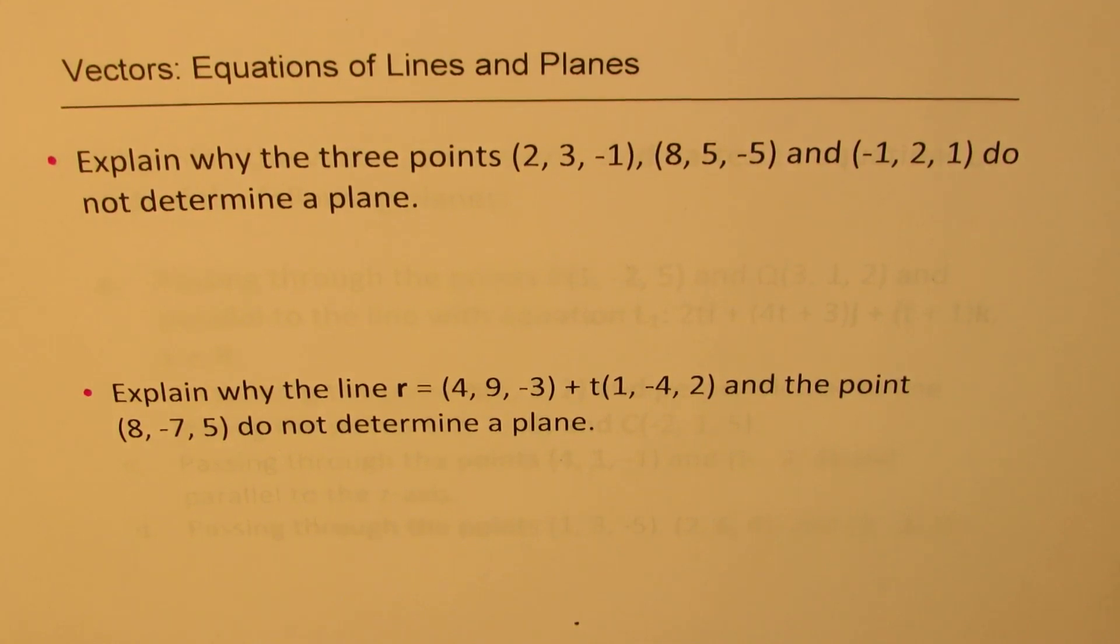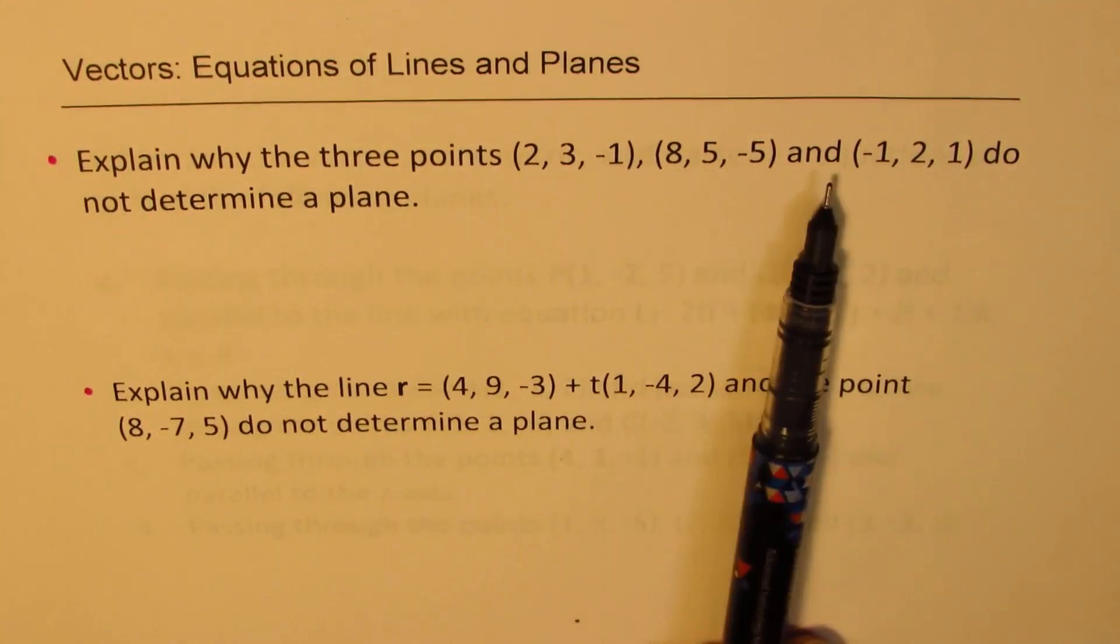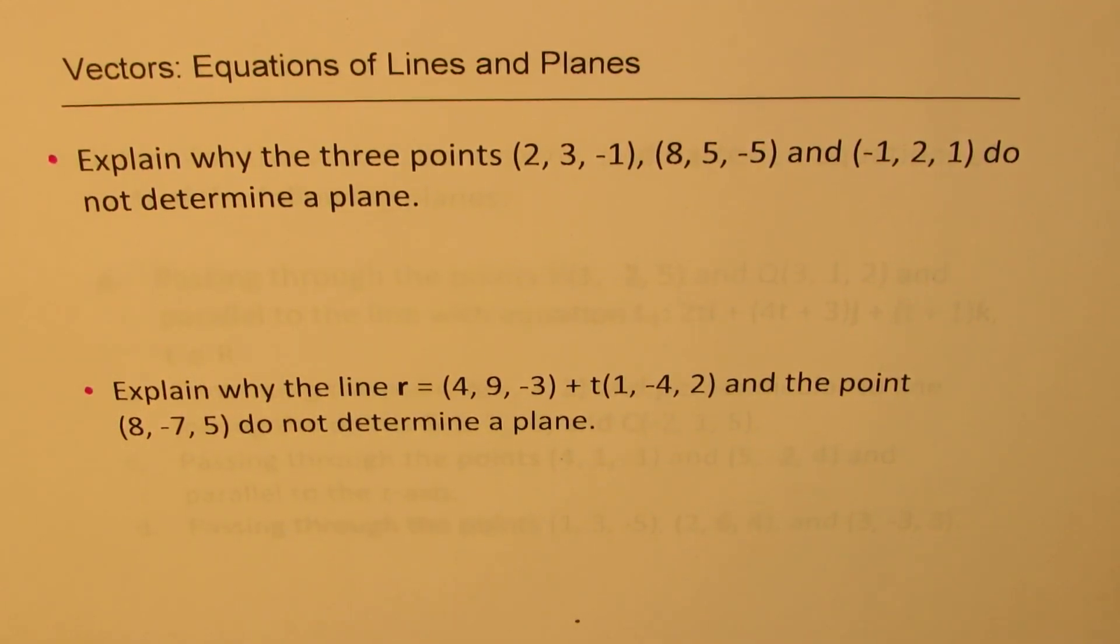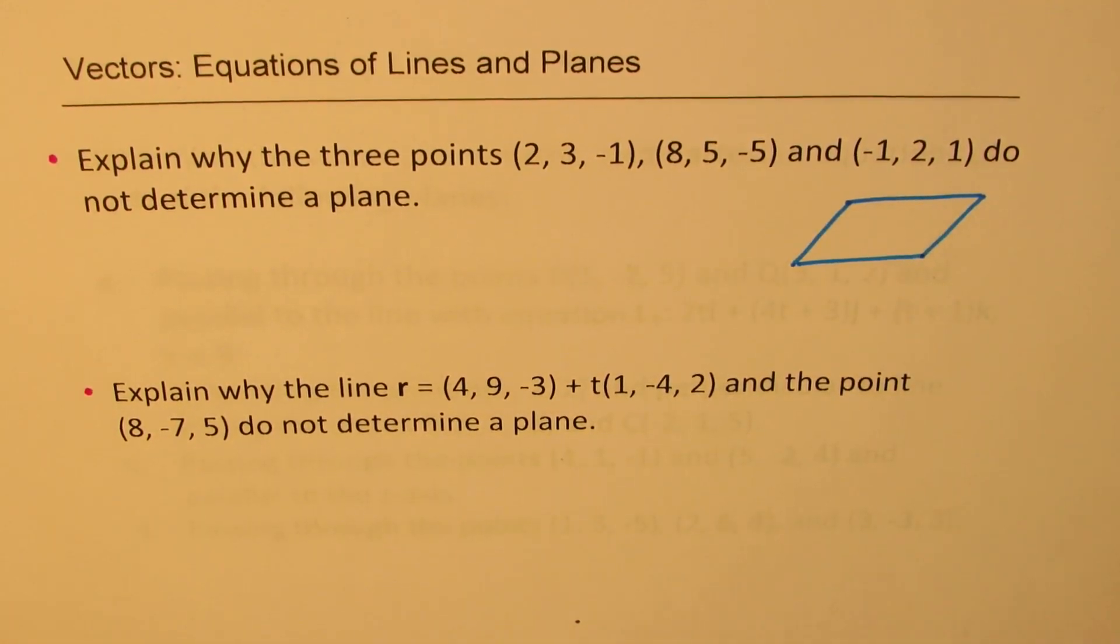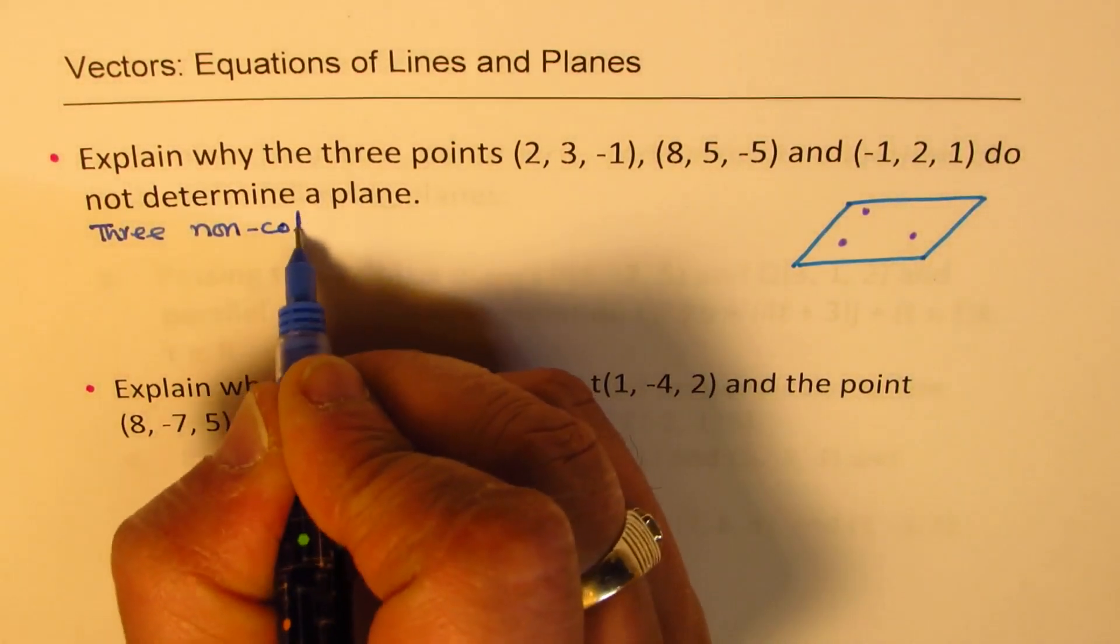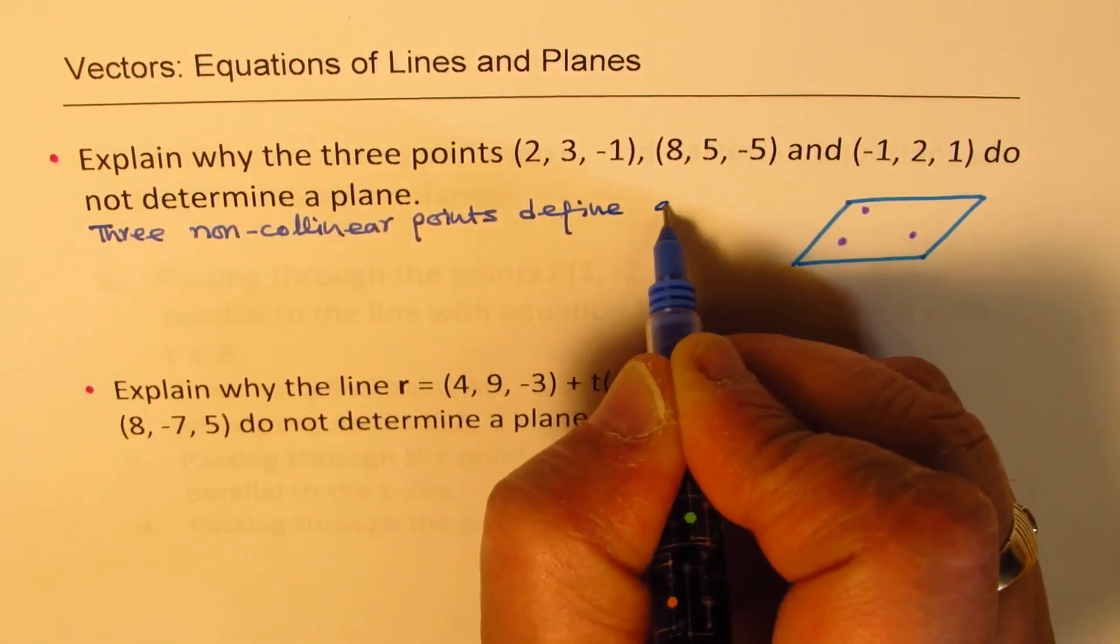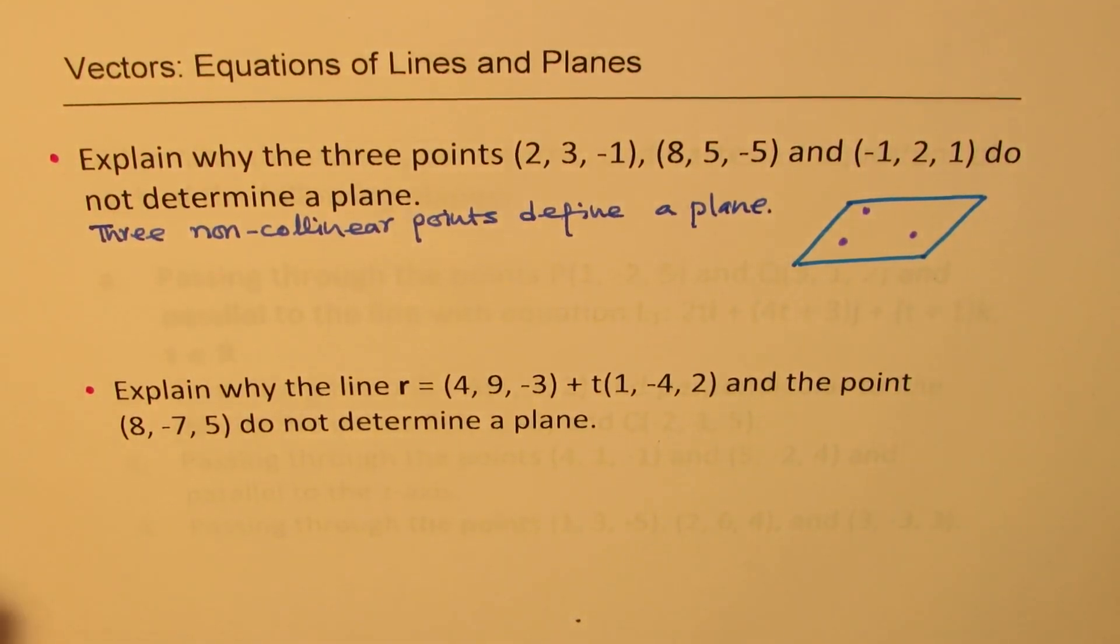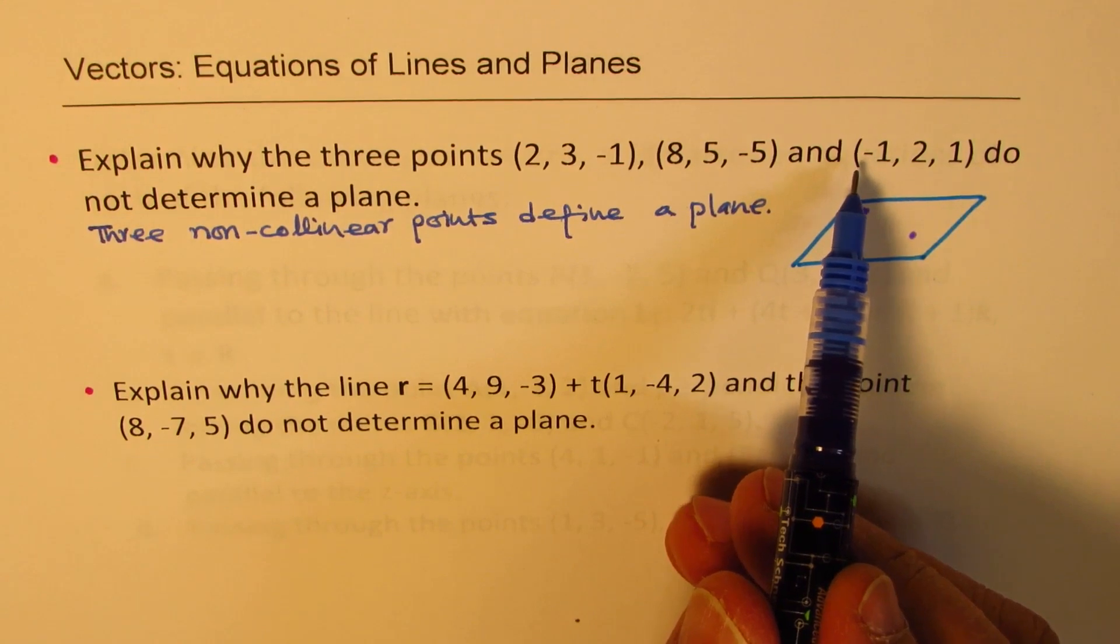Here is the second question. The importance of this question is that it really tells you what is necessary to define a plane. Explain why the three points do not determine a plane. So if I have to define a plane, in that case the three points should be non-collinear. So that is the key. So we are looking for three points, but they should be non-collinear. So the important thing here is that three non-collinear points define a plane. Now this is a communication question and therefore you need to explain the answer properly.